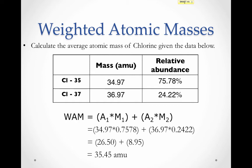When we do this, we get a weighted atomic mass of 35.45. It's important to ask yourself: does this make sense? Since about two-thirds of our sample is chlorine-35, it makes sense that our weighted atomic mass is closer to 35 than to 37. If you check the periodic table, you'll find that the atomic mass listed for chlorine is 35.45.